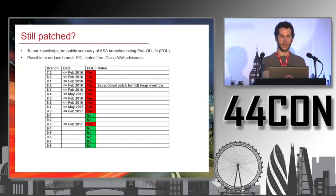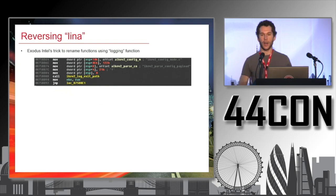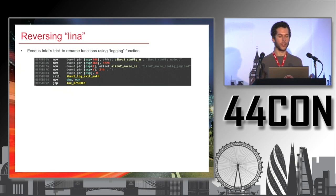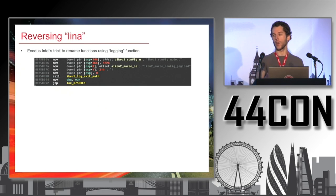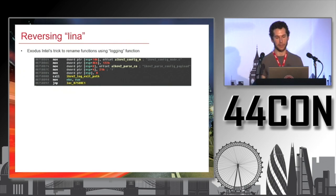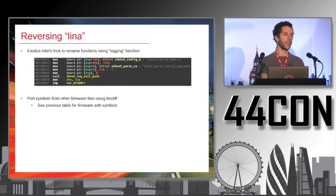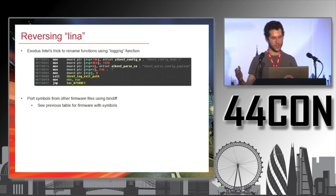Now, reversing Lina. Exodus Intel published a trick to rename functions: when you reverse engineer embedded devices, you often have debugging strings. In Lina, there's an IKEv2 log exit path logging function called by many functions, and the calling function's name is passed as a parameter. So we can script renaming functions based on those strings. Even better, we found that recent versions have symbols — so you can take one binary with symbols and apply them across all firmware versions.